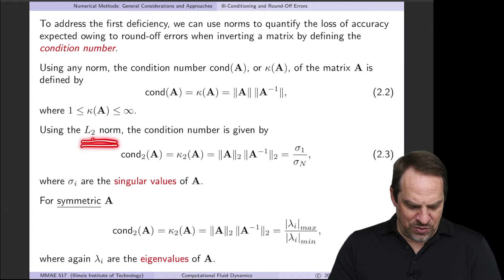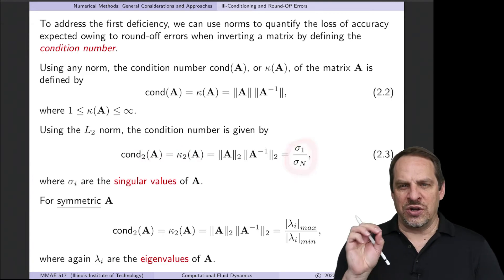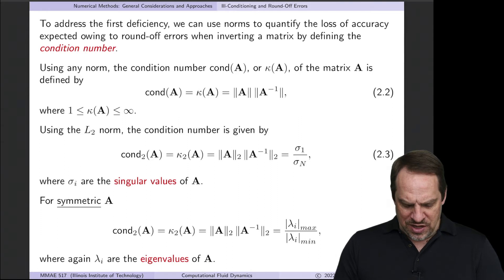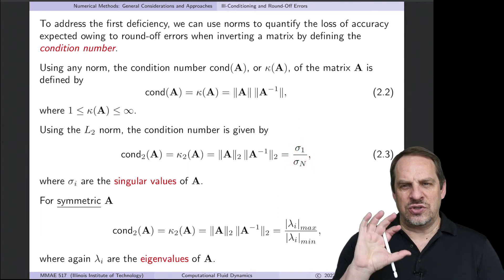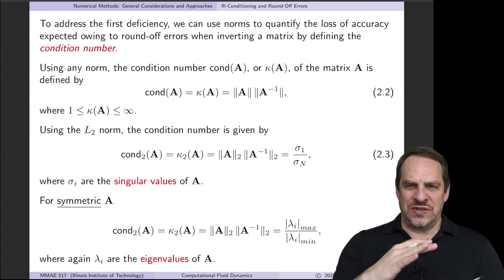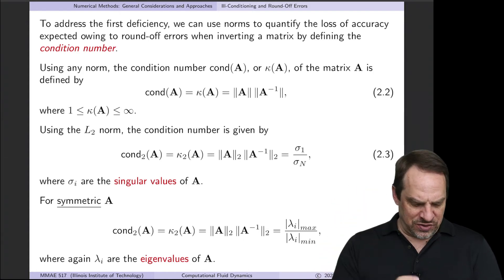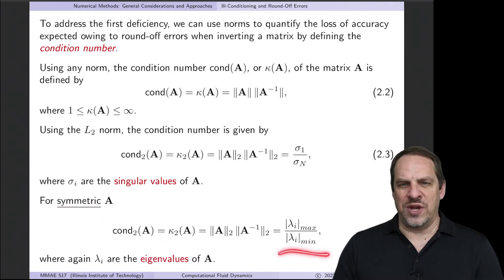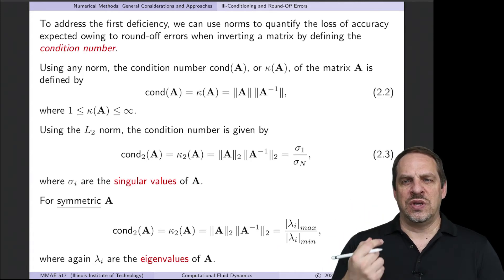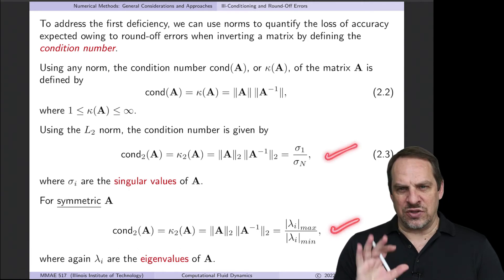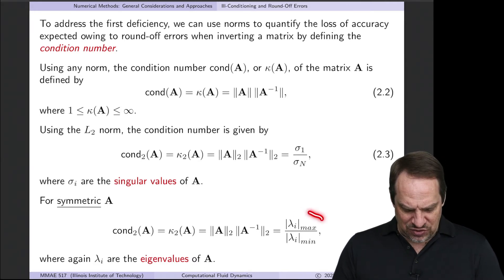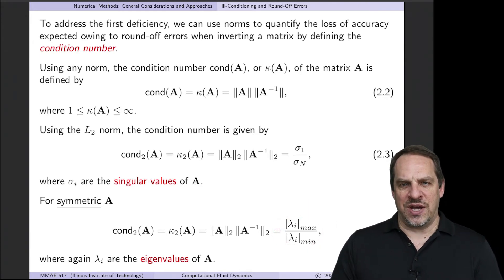For the L2 norm, the condition number turns out to equal the ratio of the largest singular value to the smallest singular value — remember they're ordered from largest to smallest, so it's a measure of the range of singular values. If the matrix A is also symmetric, then the L2 condition number equals the ratio of the largest to the smallest eigenvalues by magnitude. Eigenvalues and singular values are not the same — they're sometimes related, but they're distinct. In the symmetric case, it's again the ratio of largest to smallest eigenvalue magnitudes.